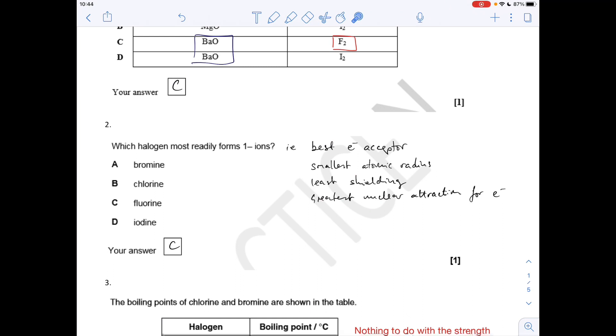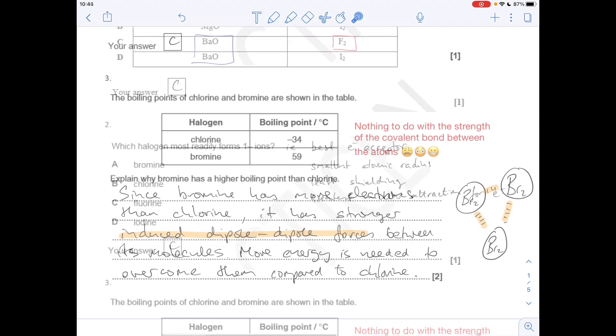Number two, which halogen most readily forms the one minus ion. It's the best electron acceptor, it's going to be the one with the smallest atomic radius, the least shielding, and the greatest nuclear attraction for the electron. Obviously it's C, fluorine.